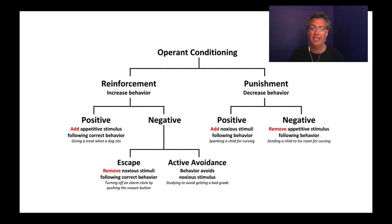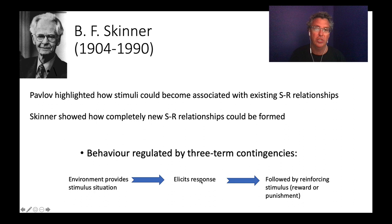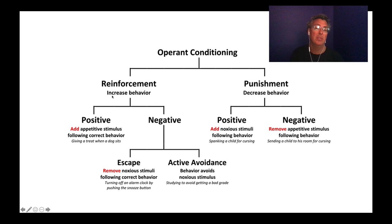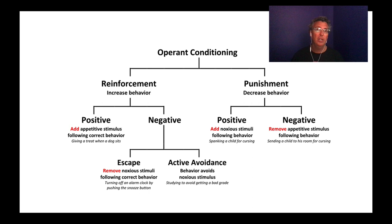If a good thing follows, the response is more likely in that condition — that's a reinforcer. If a bad thing follows, that response is less likely — that's punishment. There are subtypes. One good thing that can happen is we gain something positive for doing what we want. For example: you say 'sit' to your dog — that's the stimulus; it sits — that's the behavior; and if you give it a treat, that's a positive reward making the dog more likely to sit on that cue in the future.